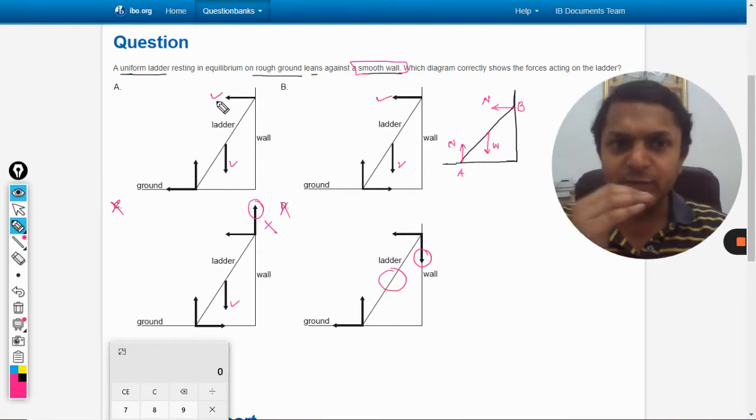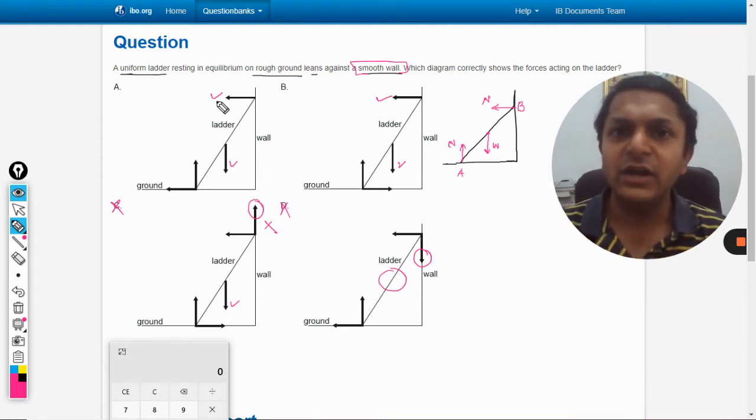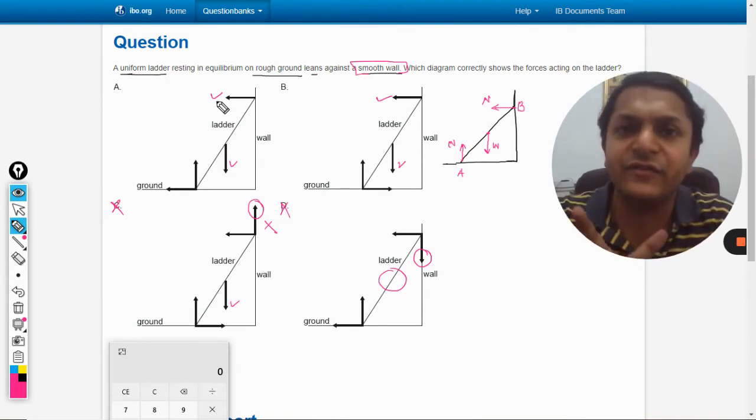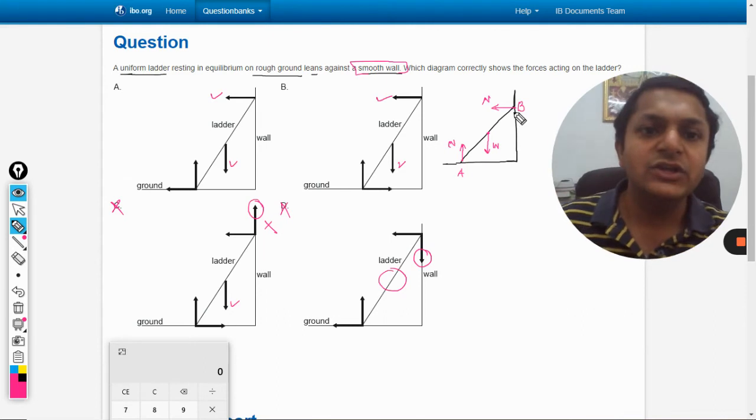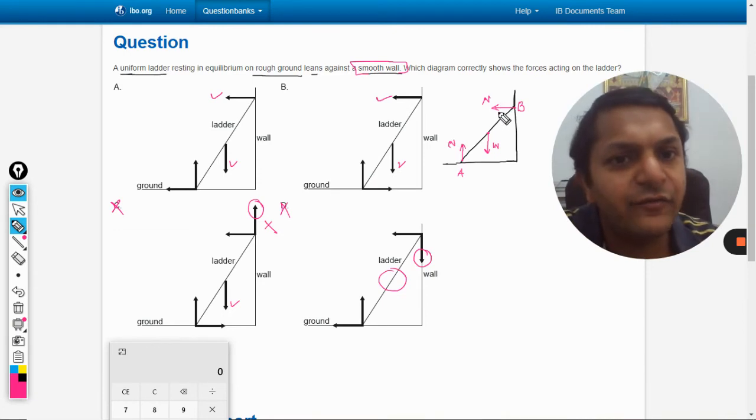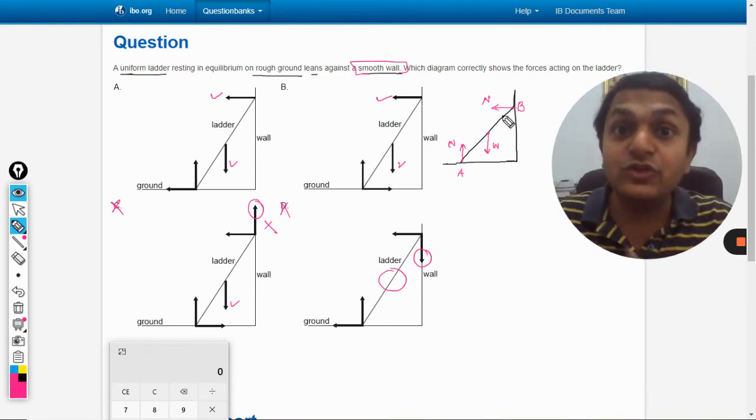The normal reaction will be there at that surface. Normal reaction is called normal because it is always perpendicular to the surface where the bodies are touching each other. Simple. So this force is perpendicular, this is also perpendicular. Now if there is this horizontal force, there has to be a force that should cancel this out, otherwise the body will start moving in a horizontal fashion.